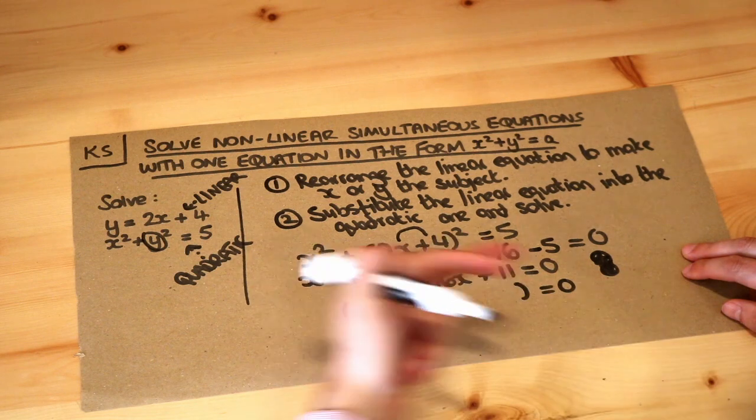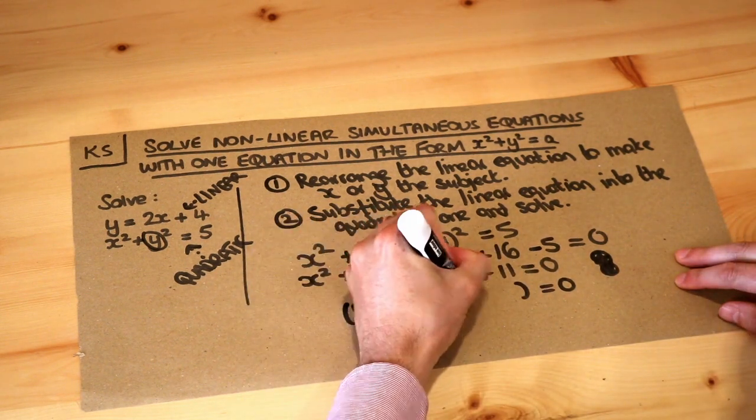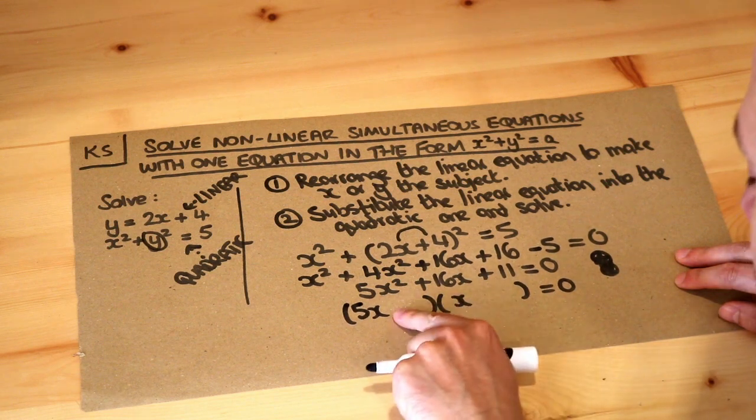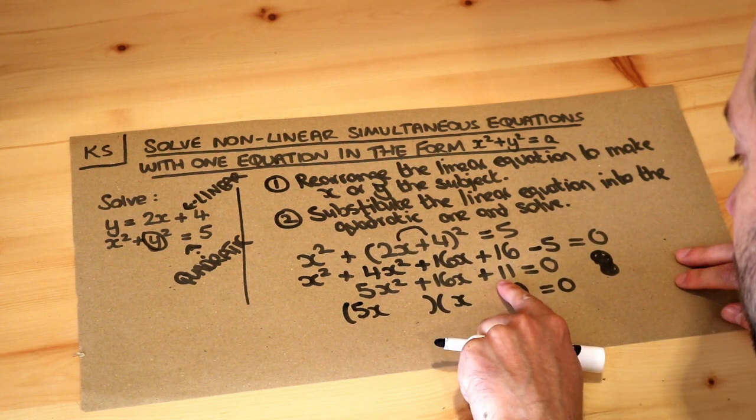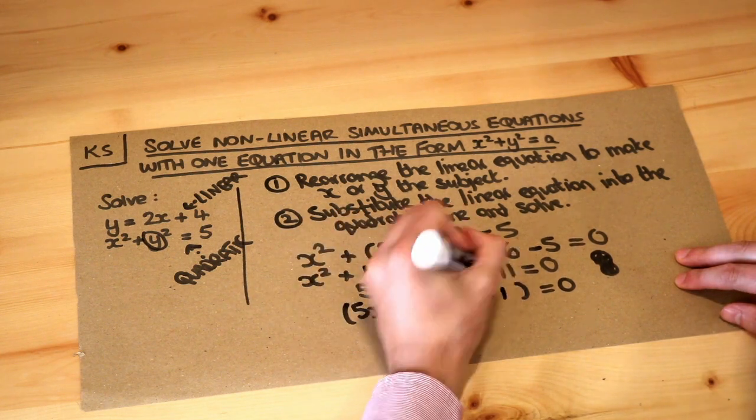I think we're going to have a 5x and an x, and the two numbers here must multiply to give 11, so I'm going to make this plus 11 and this plus 1.